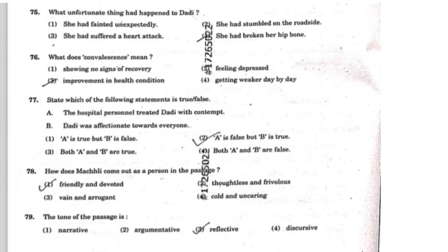The next questions are from a passage. I will not include the full passage — we will only discuss the answers. Question 75: 'What unfortunate thing had happened to Dadi?' This passage was given and you had to find the answer from it. The correct answer is the fourth option: 'She had broken her hip bone.' That is why she had to be hospitalized for a longer time. So question 75, the fourth option is correct.